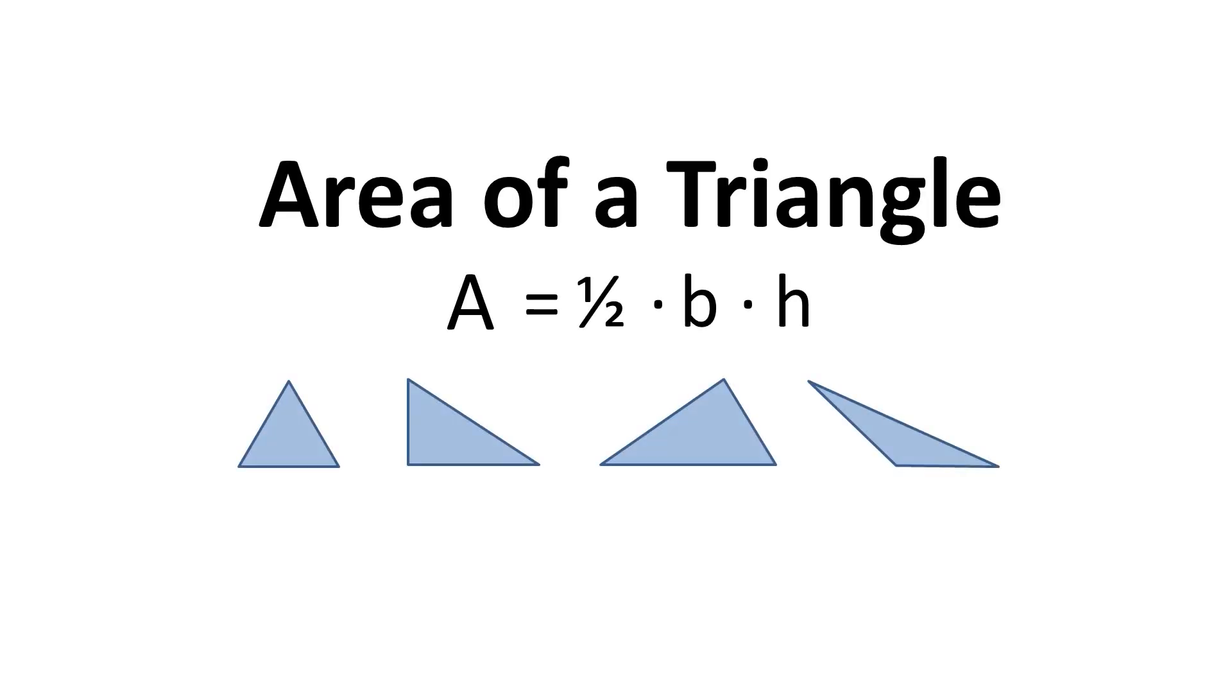Let's talk about the formula for finding the area of a triangle. Area equals 1 half base times height. We could just plug the numbers into the formula and get an answer, but what does it mean? Where does that 1 half come from?